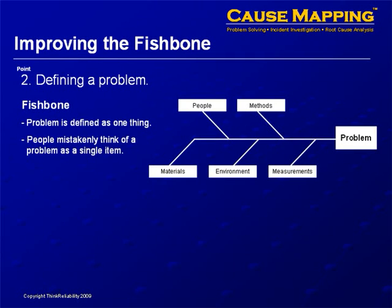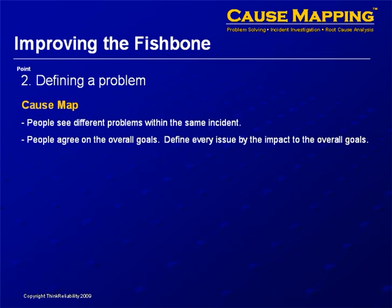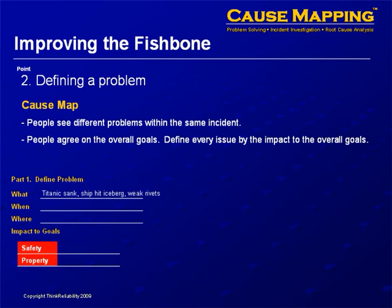The second point is that defining a problem is not really identifying the single negative effect. The problem is not really just one thing. If you ask people, for example, on the Titanic disaster what's the problem, you get different answers — people see problems differently. Some people might say the problem is the Titanic sank, some may say that the ship hit an iceberg, and some people may say the problem is the rivets were too weak. You want to capture what the problem is and accommodate these different points of view. When it happened is the timing, where it happened is the location, and defining an issue is really based on the impact to the organization's goals.